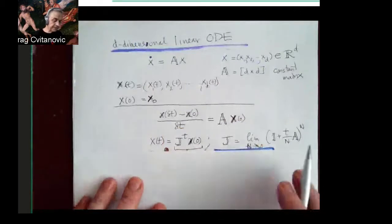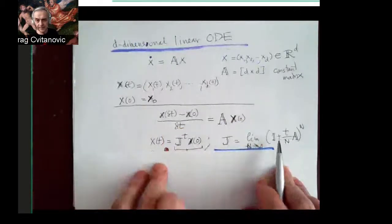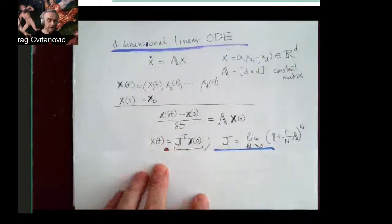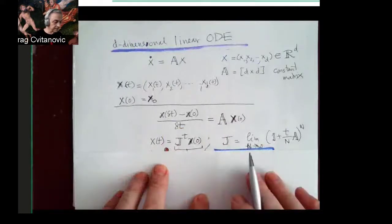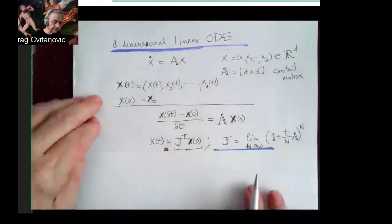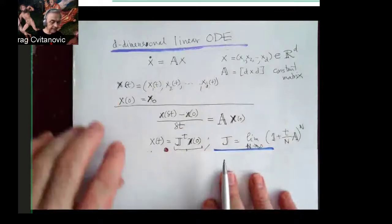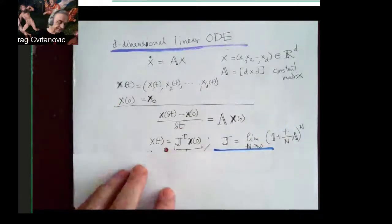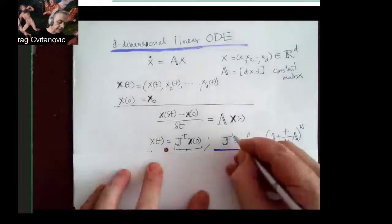And this particular matrix will be happening so often, especially when you're solving classical differential equations, linear ones. I'll give it a name J at time T.